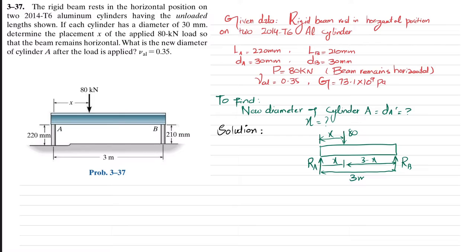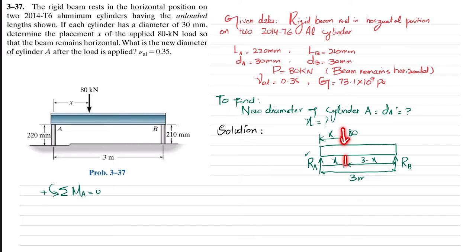The reaction force at point A is Ra and at point B is Rb. To find these reaction forces, we apply equilibrium conditions. First, the sum of all moments about point A equals zero, taking counterclockwise as positive. The moment due to Rb has a perpendicular distance of 3, and the moment due to the 80 kN load has perpendicular distance x. So: Rb × 3 − 80 × x = 0, giving Rb = 80x/3.